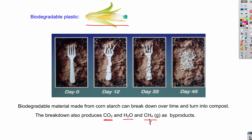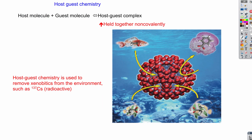The byproducts of composting biodegradable plastic are carbon dioxide, water, and methane. Methane is a useful byproduct because we can use it as a fuel and burn it. So the benefit of biodegradable plastic is that we can easily recycle it and let nature take care of it. The drawback is that you are using corn — a food source — to make plastic.